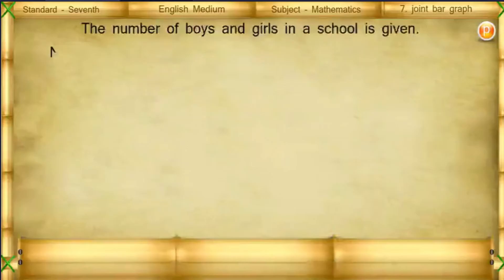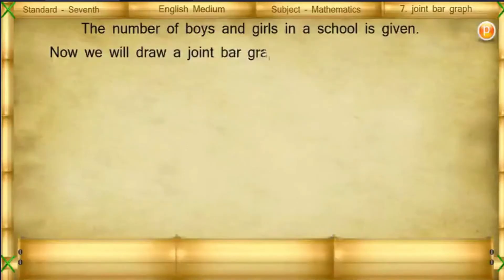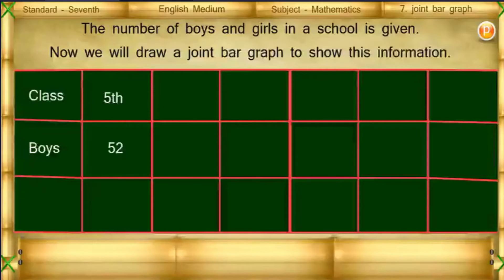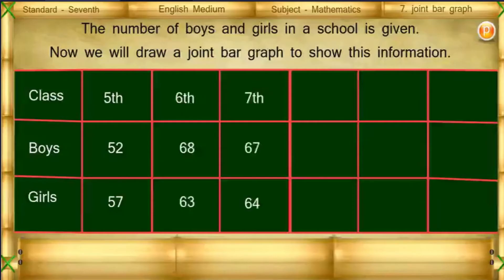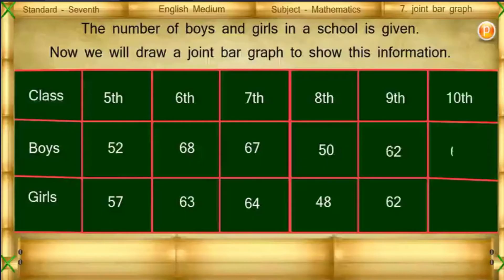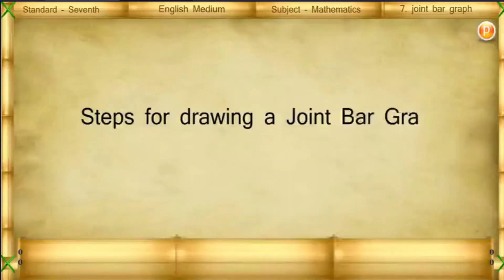Drawing a joint bar graph: The number of boys and girls in a school is given. We will draw a joint bar graph to show this information. Class 1: Boys 52, Girls 57. Class 6: 66, 68. Class 7: 63, 67. Class 8: 64, 50, 48. Class 9: 62, 62. Class 10: 60, 64.